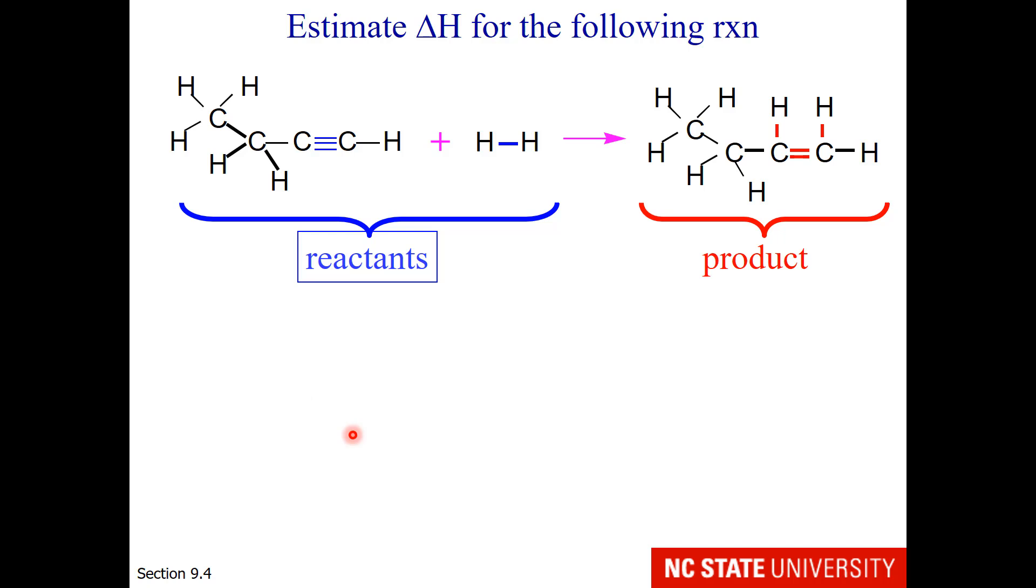Here is a reaction where we can try to estimate delta H. This may look very confusing at the start, but one easy thing we can do is identify things that do not change from the reactant side to the product side. So let's circle what does not change and ignore it.